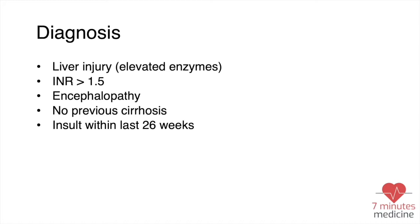Coagulopathy is one indicator and encephalopathy is the other indicator. The INR should be more than 1.5, the clinical exam should reveal encephalopathy, there should be no previous cirrhosis, and the insult should happen within the last 26 weeks — a timeline from the liver disease into the symptoms of less than 26 weeks.